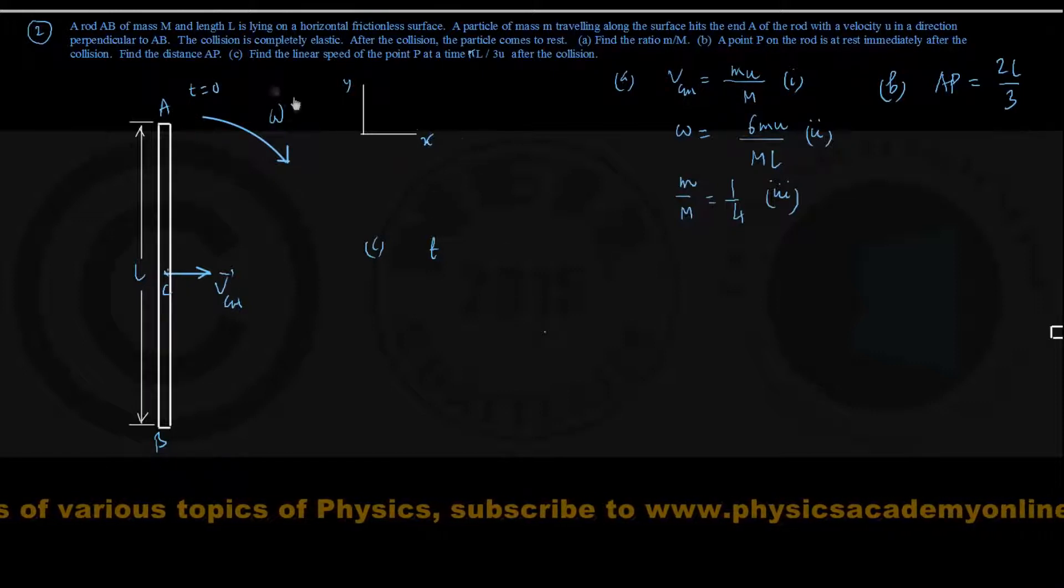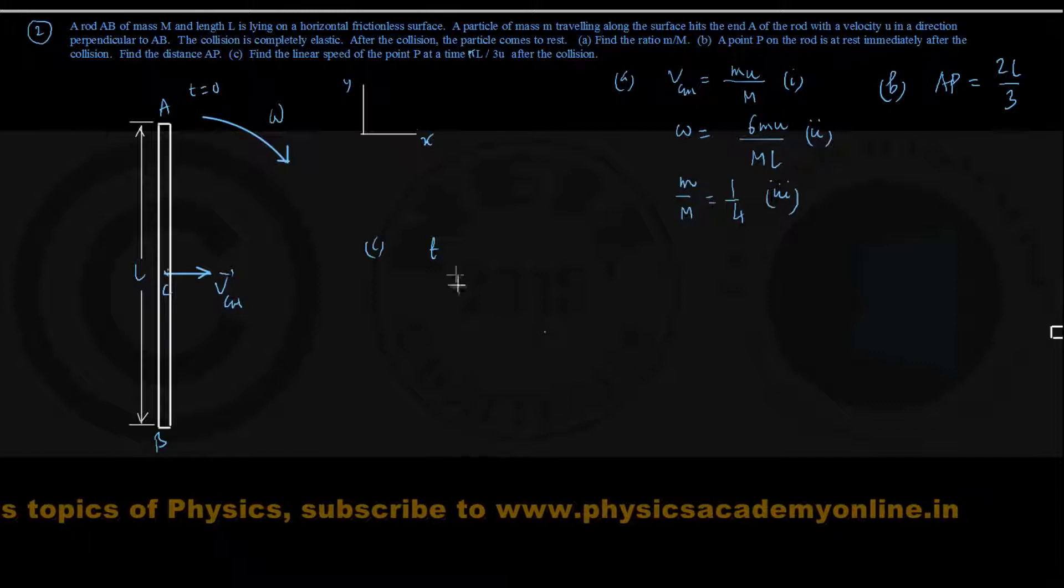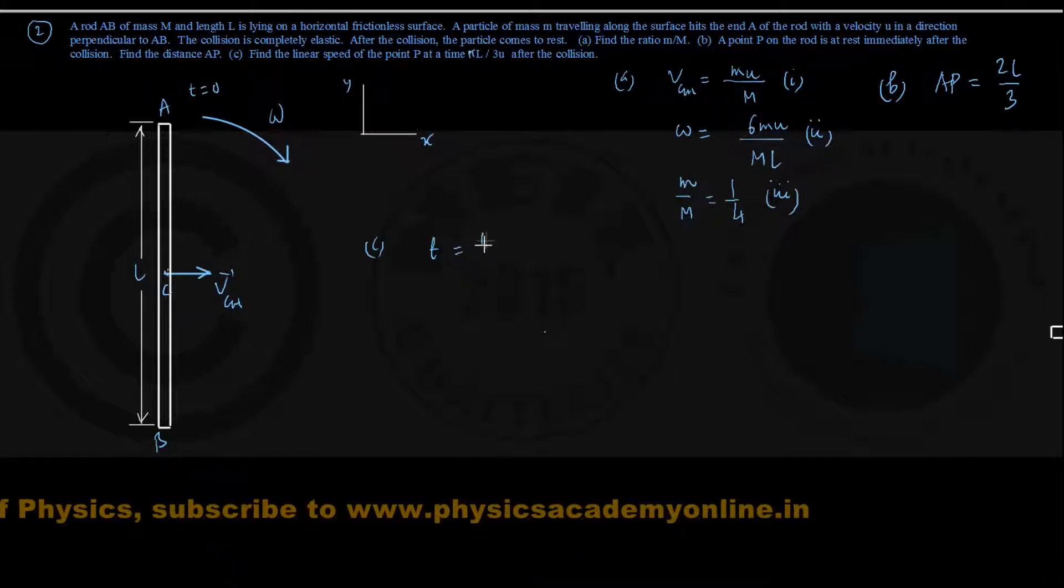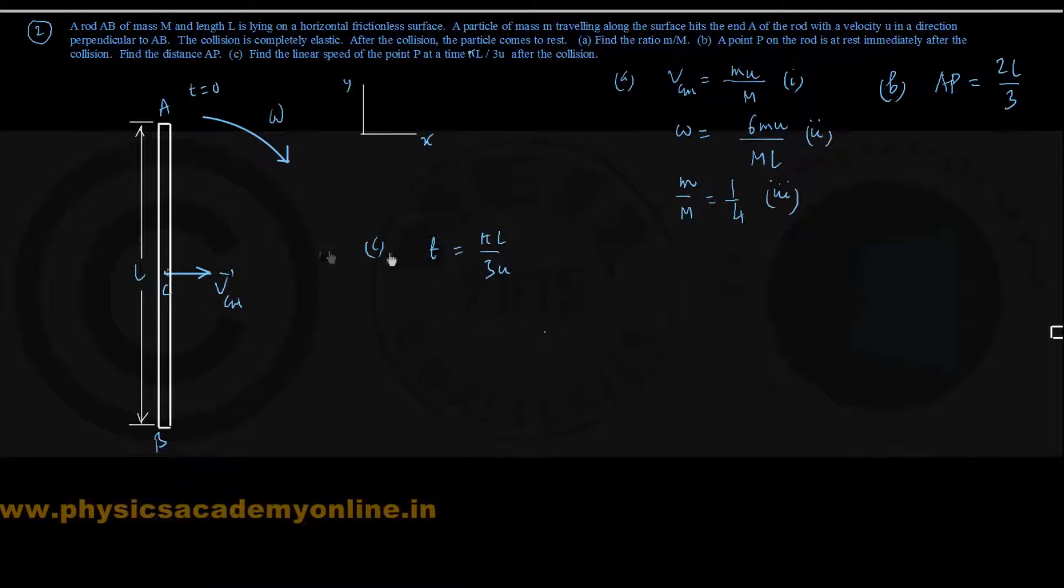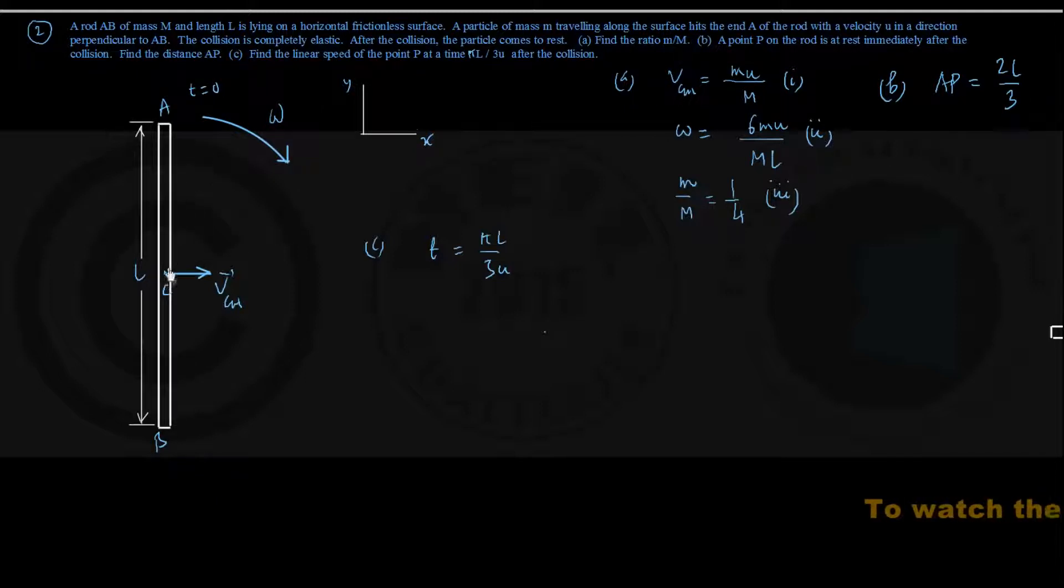But at the time t equals π times L by 3u, you want to see what would be the position of this rod because it is in two motions simultaneously: translational motion of center of mass as well as a rotational motion of the entire rod about an axis through the center of mass.